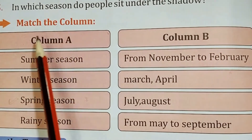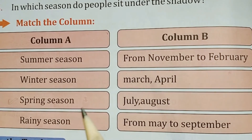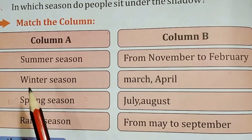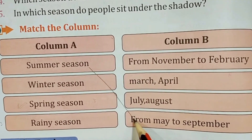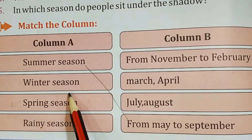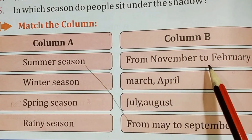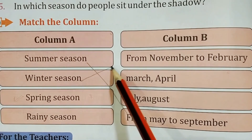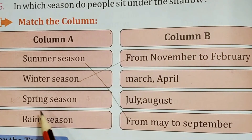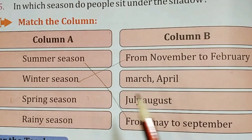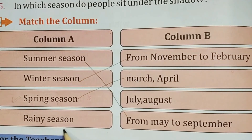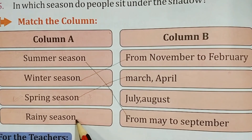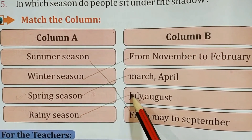Next: Match the column. Column A and B are given; we read and match them. Summer season — from May to September. Winter season — from November to February. Spring season — March-April. Rainy season — July and August.